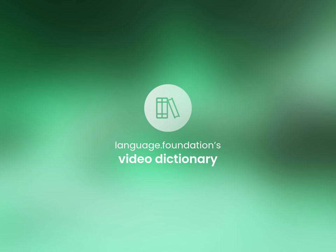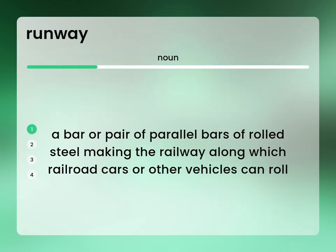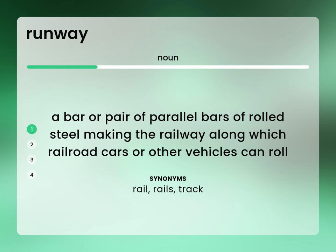Language.Foundation's Video Dictionary, helping you achieve understanding. A bar or pair of parallel bars of rolled steel making the railway along which railroad cars or other vehicles can roll. Rail, rails, track.